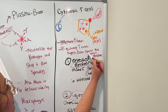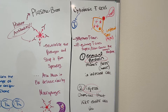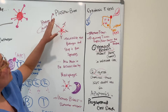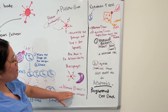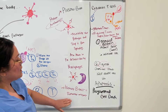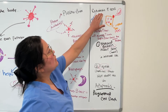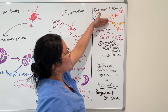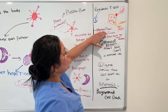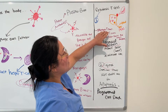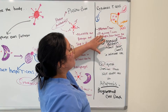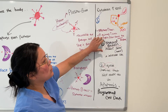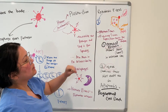Regulatory T cells make sure that the cytotoxic T cells don't go into overdrive and start killing everything — they put a stop to it or slow it down. So: plasma B cells produce antibodies; memory B cells remember the antigens; cytotoxic T cells kill infected cells; memory T cells remember the antigen; and regulatory T cells suppress or slow down the immune response.